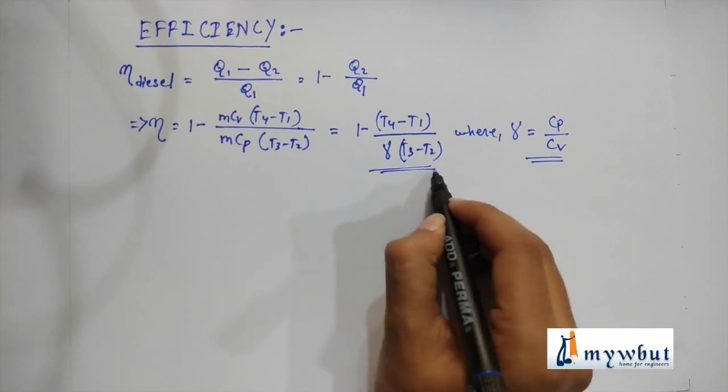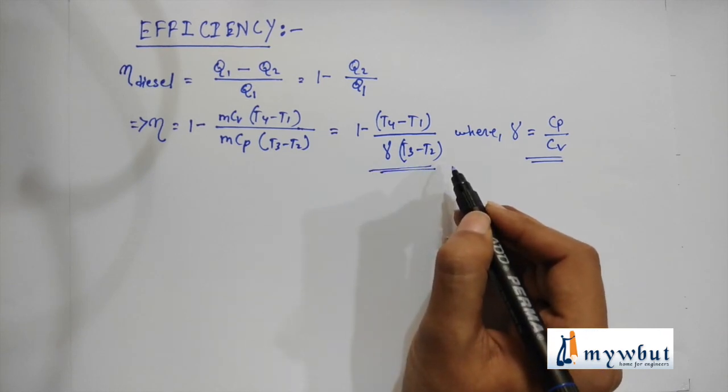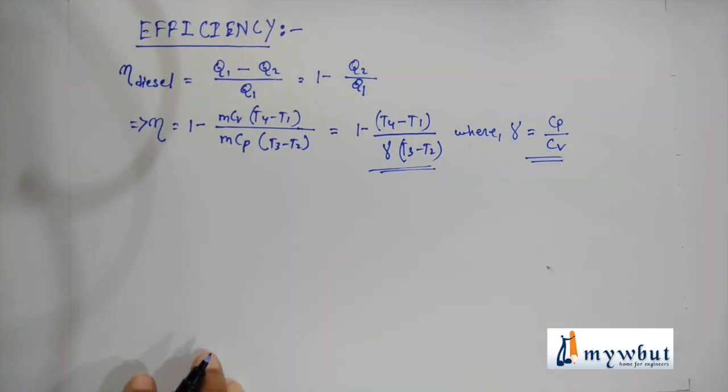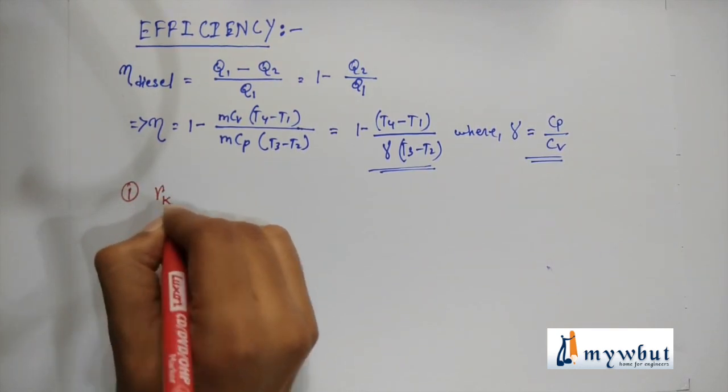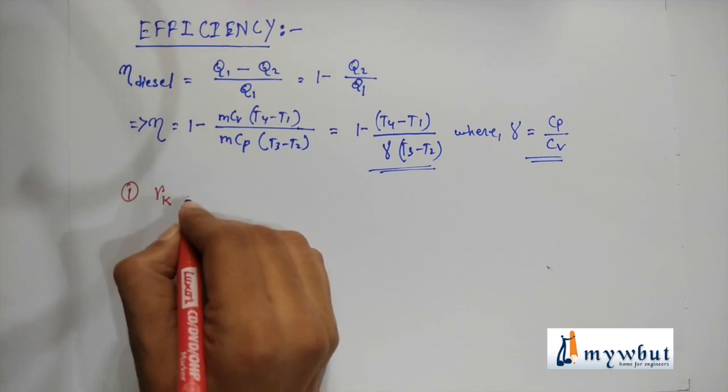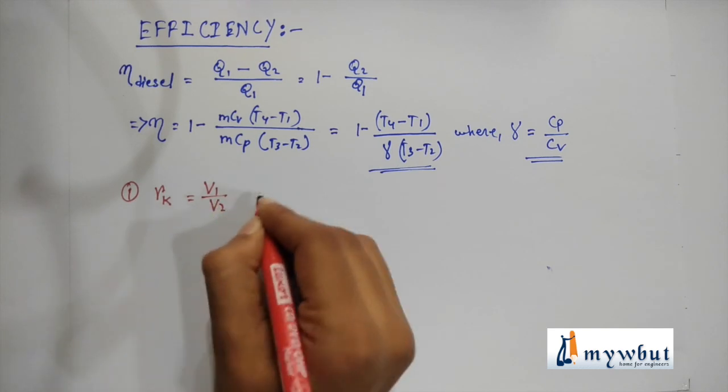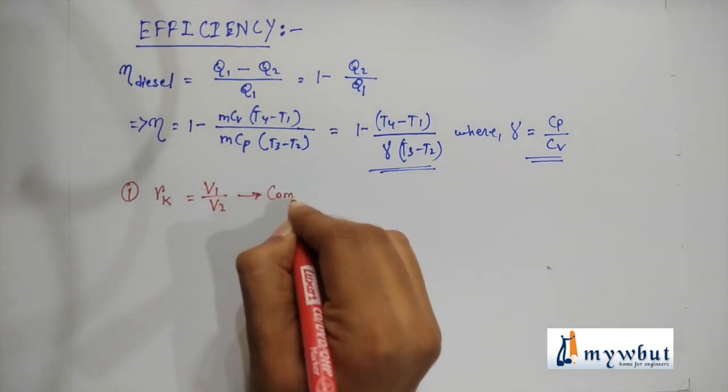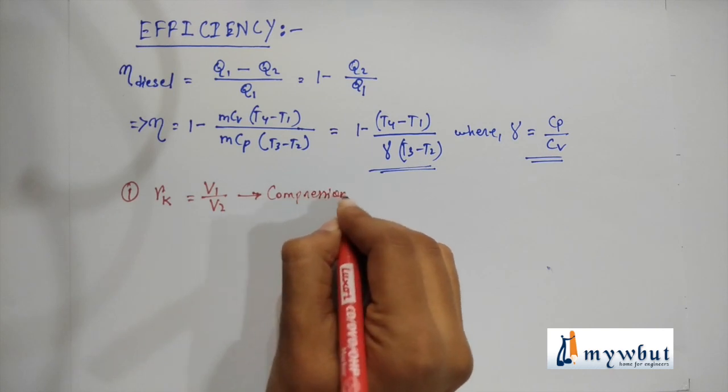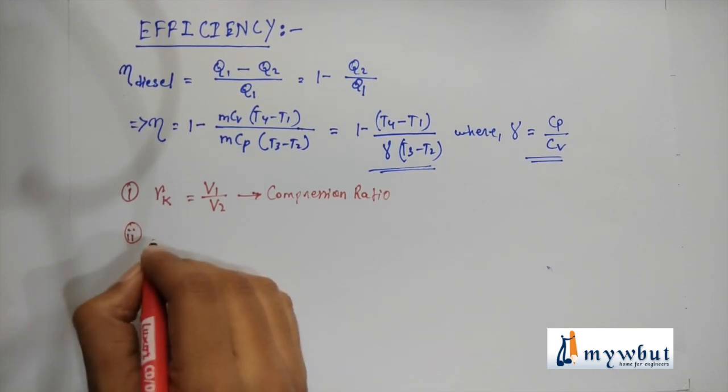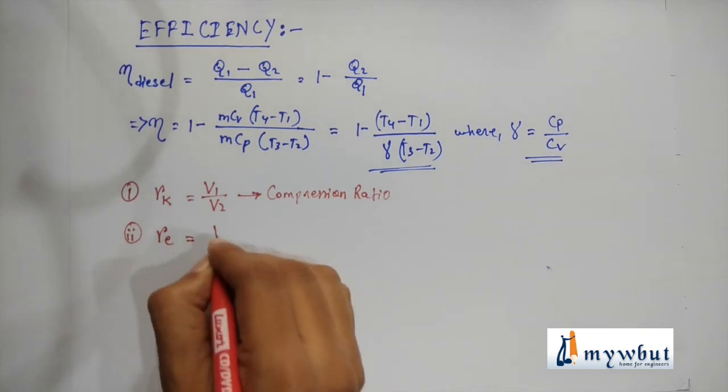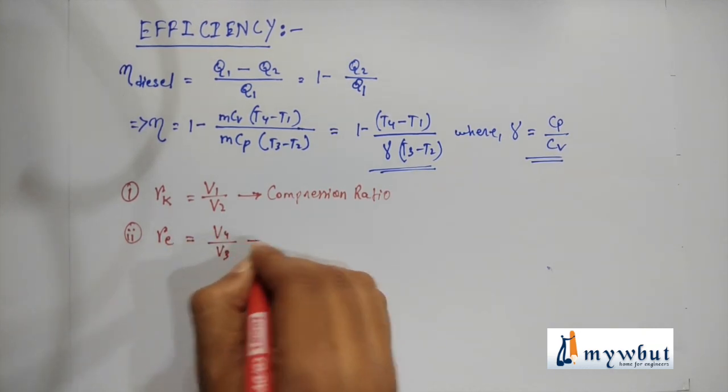So this is one equation for the efficiency of the diesel cycle. Now before going further we have to define few important terms. Number 1: RK, also known as the compression ratio, that is V1/V2. Number 2 is RE, that is V4/V3, that is known as expansion ratio.